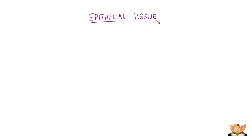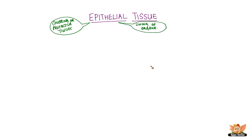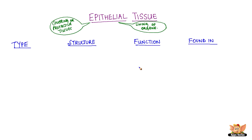Epithelial tissue. Let's learn about epithelial tissues. Epithelial tissues are covering of protective tissues. They are mainly found in the lining of organs. There are different types of epithelial tissues.